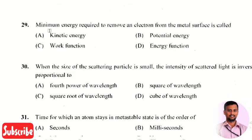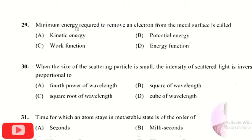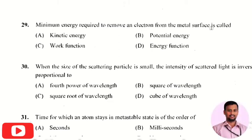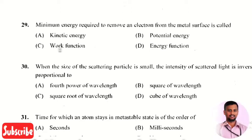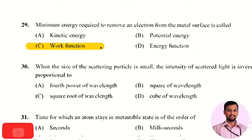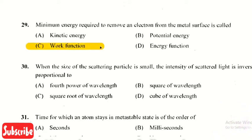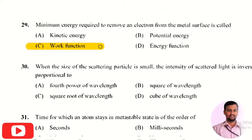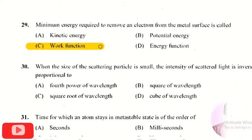The next question is: the minimum energy required to remove an electron from the metal surface is called? The right answer is option 3, that is work function. So the energy required to remove electrons from the metal surface is called the work function.